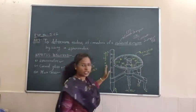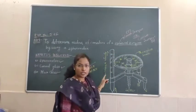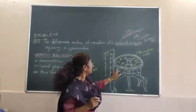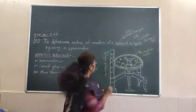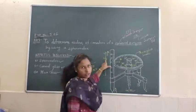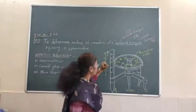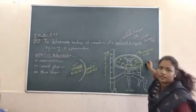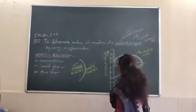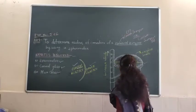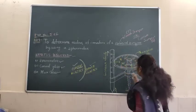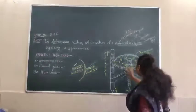This apparatus has two scales. Just like a screw gauge has two scales — one linear scale and one circular scale — similarly this apparatus also has two scales. One is the linear scale, which has around 2 centimeter measurement range, and the other is the circular scale. The circular scale has total divisions from 0, 10, 20, 30, 40, 50, 60, 70, 80, and 90 — the total number of divisions in the circular scale is 100.